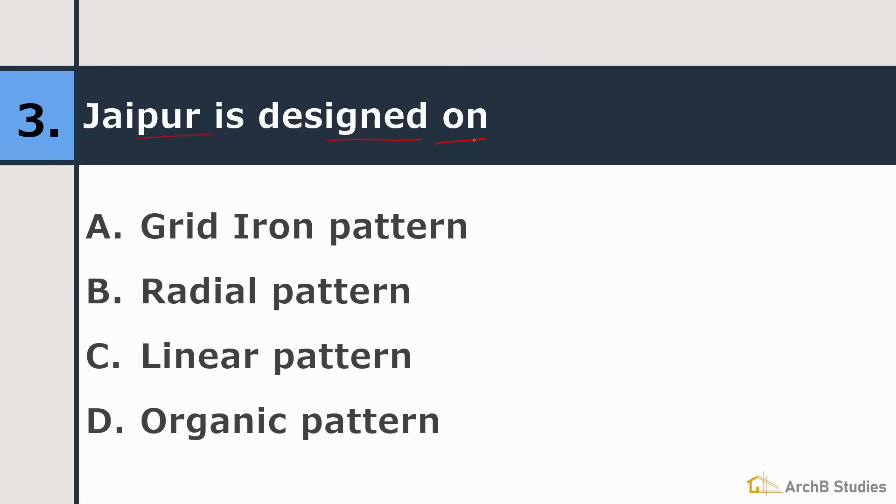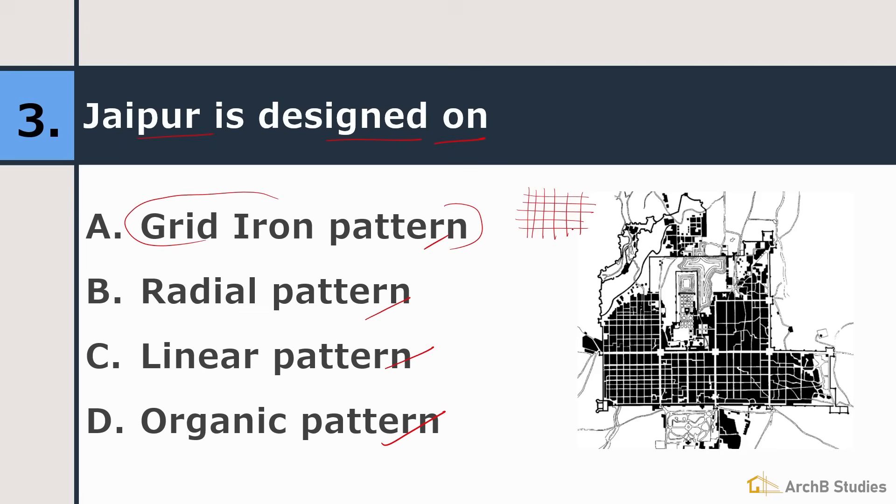Jaipur is designed on Grid Iron Pattern, Radial Pattern, Linear Pattern or Organic Pattern? Its correct answer is Grid Iron Pattern. In this planning, the cities are planned simply in the pattern like this. Okay, let's see the image. So you can see it is the Grid Iron Pattern where there are major roads, then there are smaller streets or roads you can say.